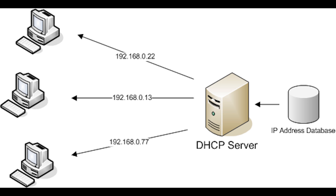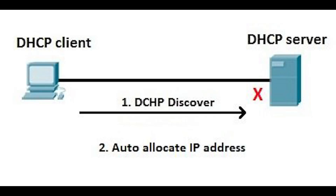IPv4 uses DHCP, but there's also Automatic Private IP Addressing (APIPA). APIPA is a feature in an operating system that gives itself an IP address if it is incapable of receiving one dynamically from DHCP. It enables computers to automatically self-configure an IP address and subnet mask when their DHCP server isn't reachable. When a DHCP client boots up and cannot communicate with the DHCP server, it uses APIPA to configure itself with an address from the APIPA range, allowing communication with other hosts on the local network segment also configured for APIPA. However, it does not configure a default gateway, limiting communication to the local area network.